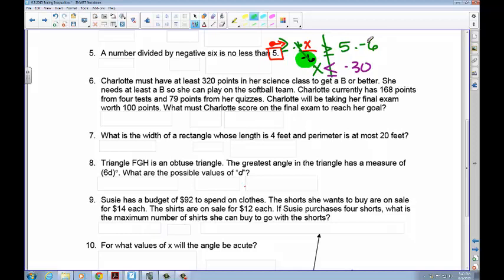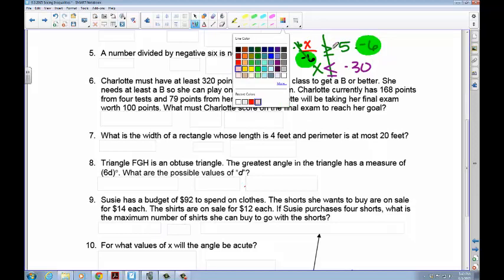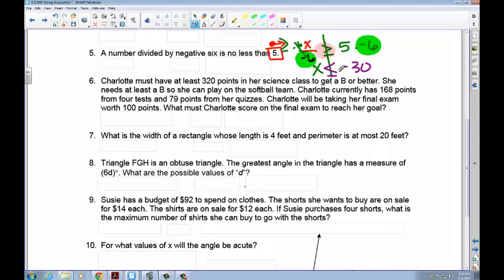we're dividing by negative six and we're multiplying by negative six, the inequality changes. And so we no longer have a greater than or equal to, we have a less than or equal to.